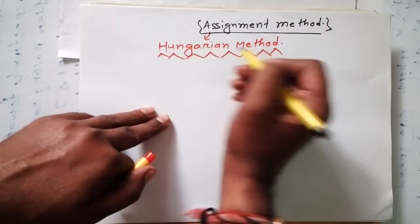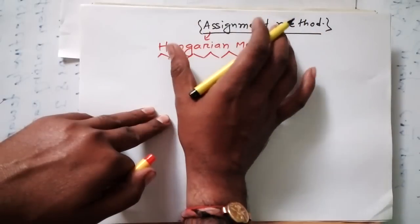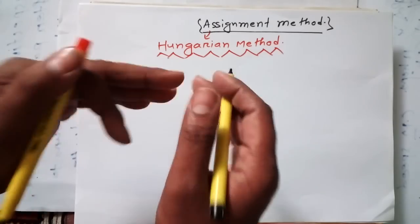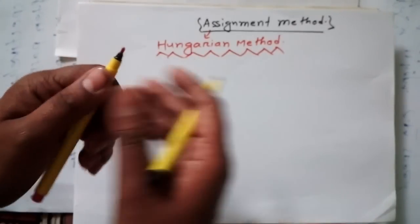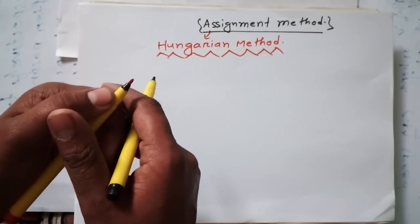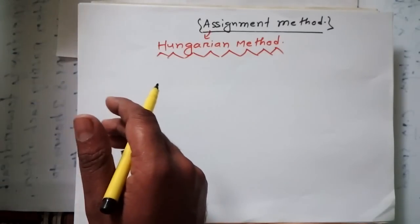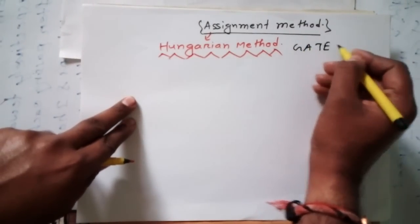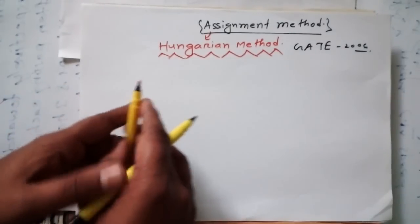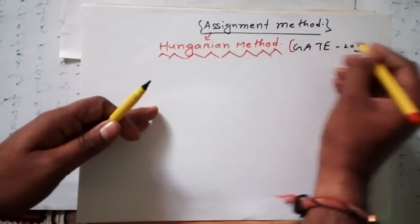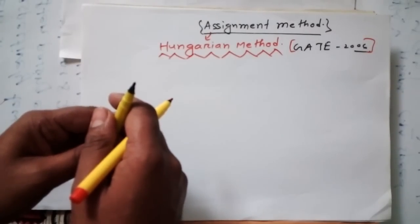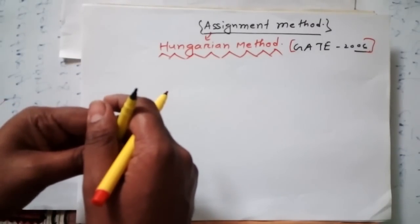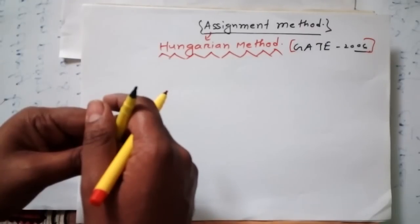The assignment method is also known as the Hungarian method. We study it as part of linear programming problems. In this video I will provide one question which has been asked in GATE previous year question papers — specifically in GATE 2006 — so you understand the kind of questions asked. If you get the base of this, you can answer any question related to this topic.